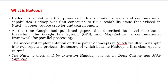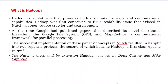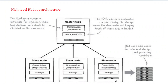The successful implementation of those papers in Nutch resulted in the split into two projects, the second of which became Hadoop and the first became an Apache project. The Nutch project and, by extension, Hadoop was led by Doug Cutting and Mike Cafarella — these two are the fathers of Hadoop.